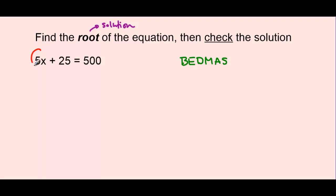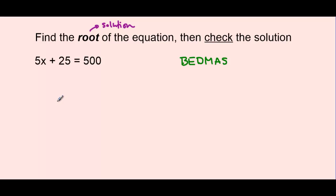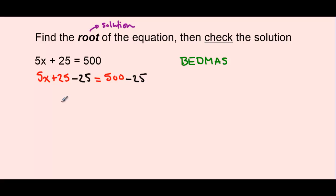Right now, the x is being multiplied by 5 and also added to with 25. So in order to isolate for x, we want to do backwards BEDMAS, which means we do the addition part first, then worry about the multiplication part. Let's start by getting rid of the 25. The opposite operation is to subtract 25 from both sides. 5x plus 25 subtract 25 equals 500 subtract 25. When we simplify, we end up with 5x all by itself on the left side, as the 25 and negative 25 cancel out, and 500 subtract 25 on the right side.